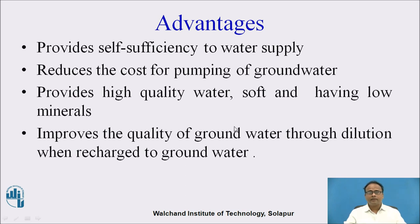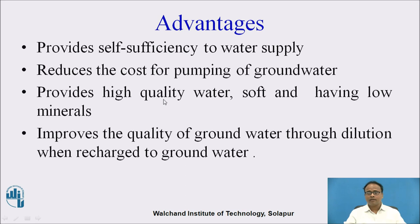The advantages of rainwater harvesting system: it provides self-sufficiency to water supply. It reduces the cost for pumping of ground water, because the water level is going to be increased, so the cost of pumping is decreased. Also, it provides high quality water, soft and having low minerals, as we remove the impurities by using the filter media. It also improves the quality of ground water through dilution when recharged to ground water.